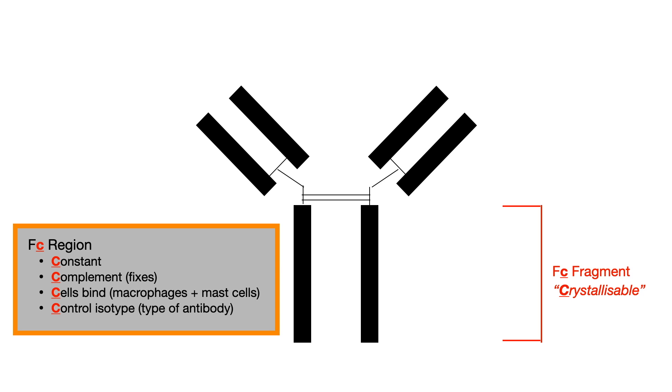The FC fragment is constant, whereas, as you'll see shortly, the FAB fragment is variable. So, this is a constant region. It doesn't change.